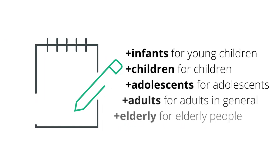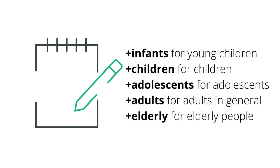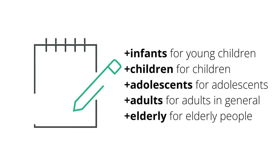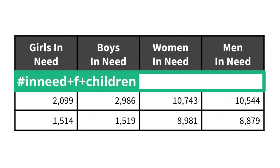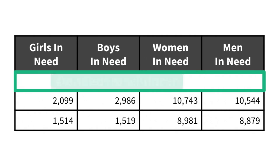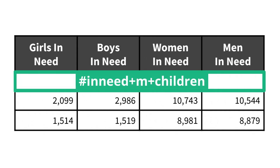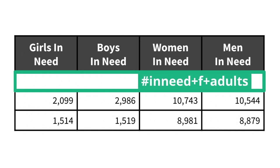There are five attributes used to disaggregate by age: +infants for very young children, +children for children in general, +adolescents for adolescents, +adults for adults in general, and +elderly for elderly people. In this example, for data on the number of girls, boys, women, and men in need of humanitarian assistance, we would use: #inneed+F+children for the number of girls, #inneed+M+children for the number of boys, and #inneed+F+adults for the number of women.